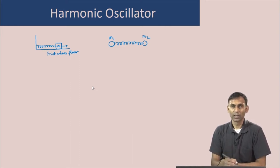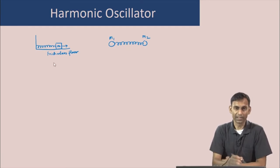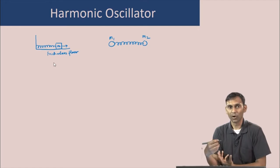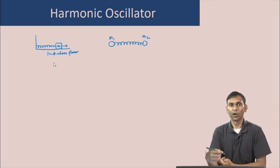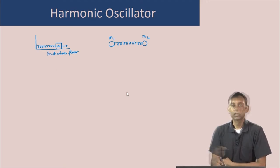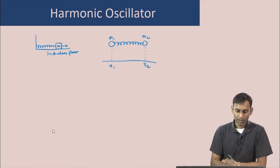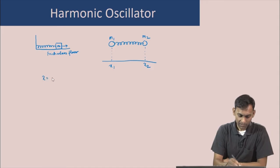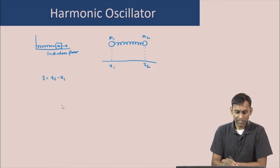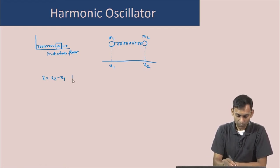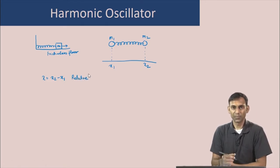Our goal is to show that this system of two particles attached by a spring is actually identical to the system of one particle attached by a spring, plus another problem of an overall translation of center of mass. Let us assume that these two masses have positions x1 and x2 for masses m1 and m2. We can define a relative coordinate x which is x2 minus x1, which is the difference in the positions of the two coordinates. This relative coordinate measures how much the spring is stretched or compressed and therefore tells us how much force is acting on the two masses.